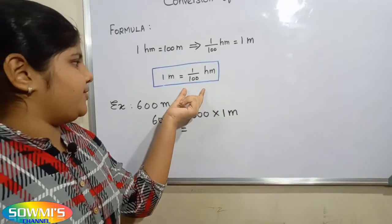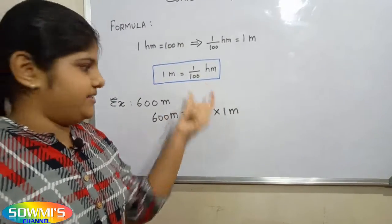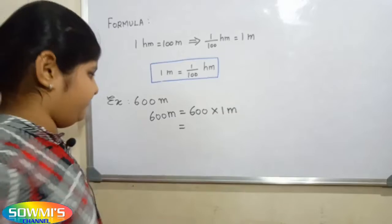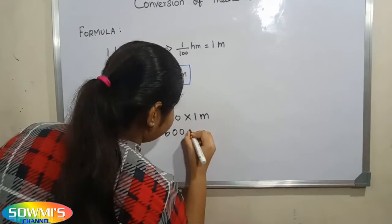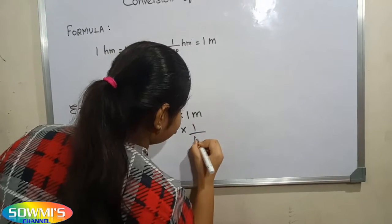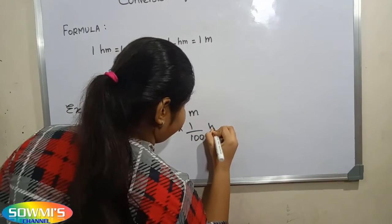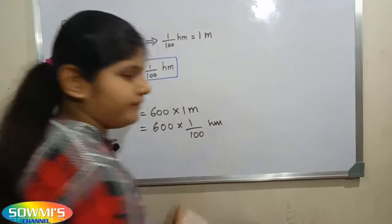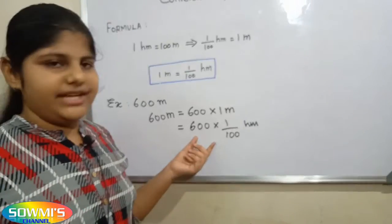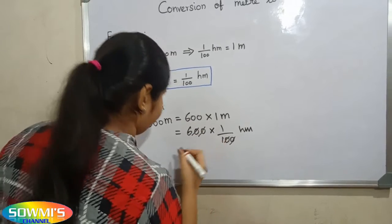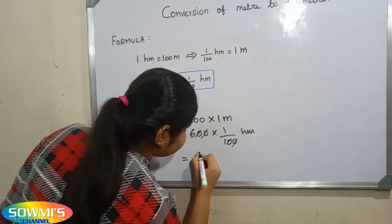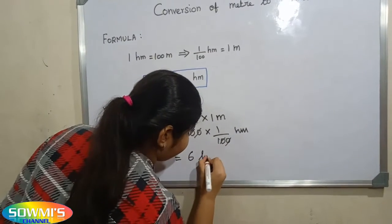Now we have to substitute 1/100 hectometer in the place of 1 meter. 600 multiplied by 1/100 hectometer. Now the zeros get cancelled. So the answer is 6 hectometers.